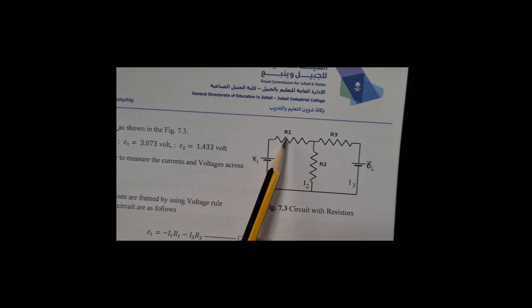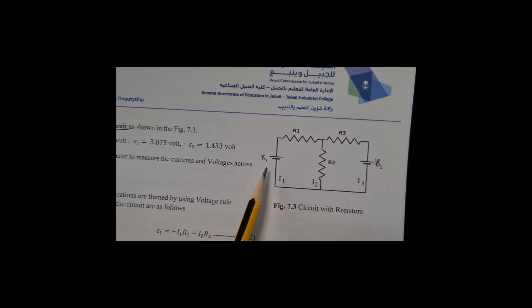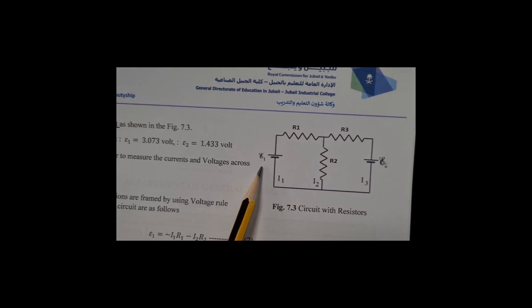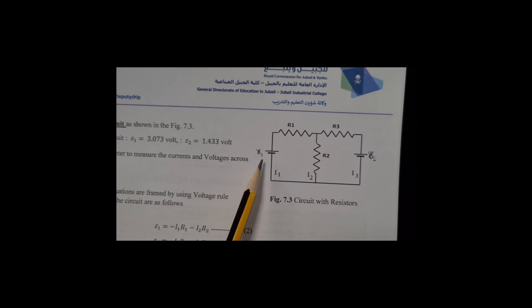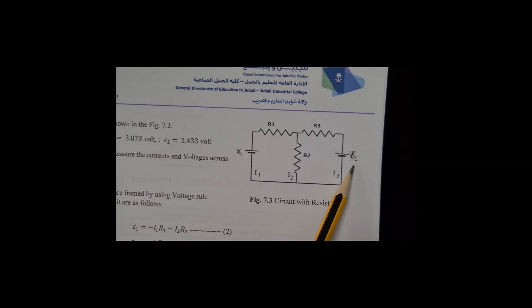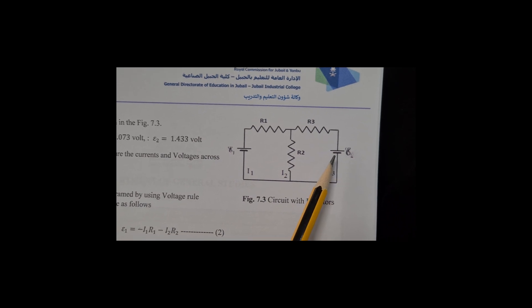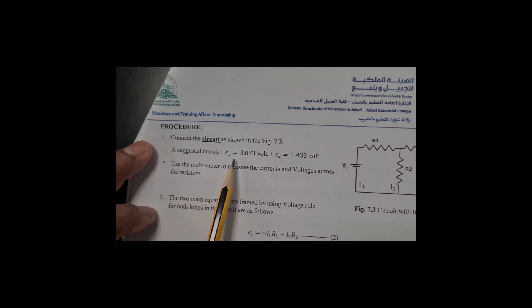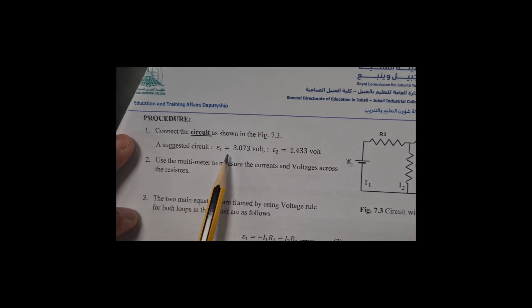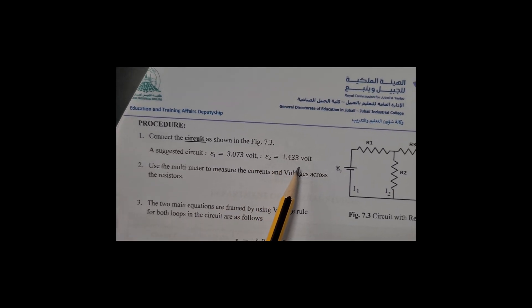We have two loops constructed using three resistors R1, R2, R3, and two EMF sources, Epsilon 1 and Epsilon 2, connected as shown in the circuit. We are going to provide power source 1 (Epsilon 1) and power source 2 (Epsilon 2).